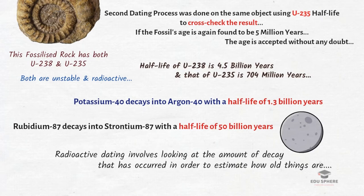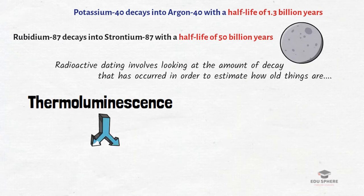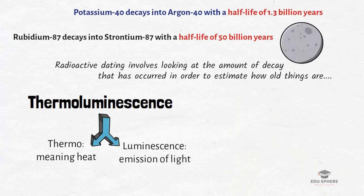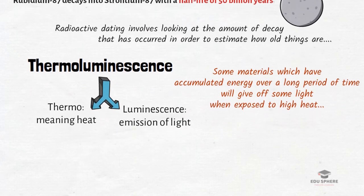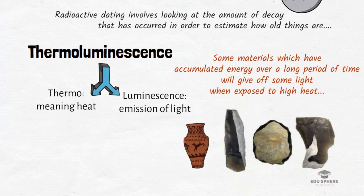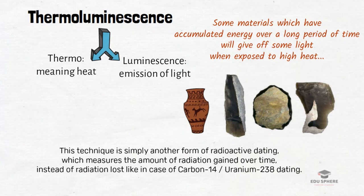Next in the absolute dating methods is thermoluminescence. Breaking down the word: 'thermo' means heat and 'luminescence' implies emission of light — meaning some materials that have accumulated energy over a long period will emit light when exposed to high heat. Thermoluminescence dating is used mostly on pottery and other inorganic materials such as burned flint or terracotta objects, and it can date further back than 50,000 years, unlike radiocarbon dating. Importantly, here we measure radiation gained over time, not radiation lost.